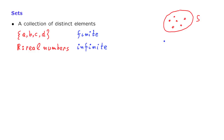A piece of notation: we use this notation to indicate that a certain object x is an element of a set S. We read that as "x belongs to S." If x is not an element of S, then we use this notation to indicate it, and we read it as "x does not belong to S."